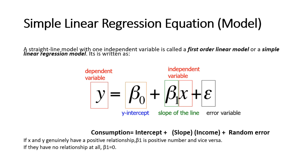A straight-line method with one independent variable is called a first-order linear model, or simple linear regression model. It is written as: y = β₀ + β₁x + ε (error term). Here y is the dependent variable, β₀ is the y-intercept — the place where the straight line touches the y-axis — β₁ is the regression coefficient, telling us the amount of change in the independent variable that can cause a change in the dependent variable, and x is the independent variable.